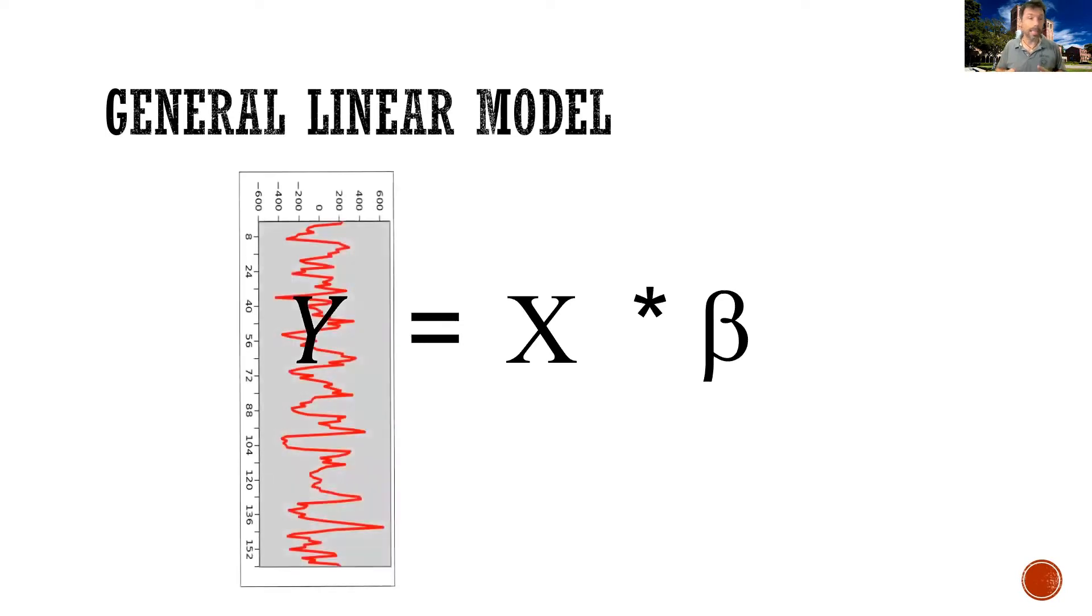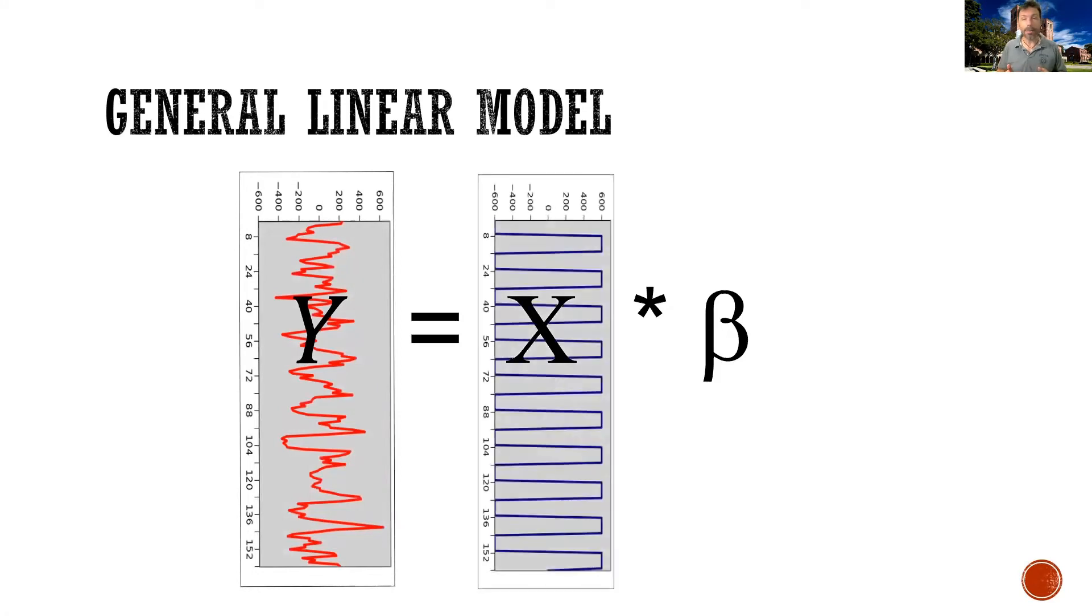So let's look at this from the lens of a general linear model. So here's our expression, and really, as I showed earlier, y is nothing but the time series of our voxel. And x, obviously, is the onset and offset, is our experimental design, the onset and offset of our task of interest.